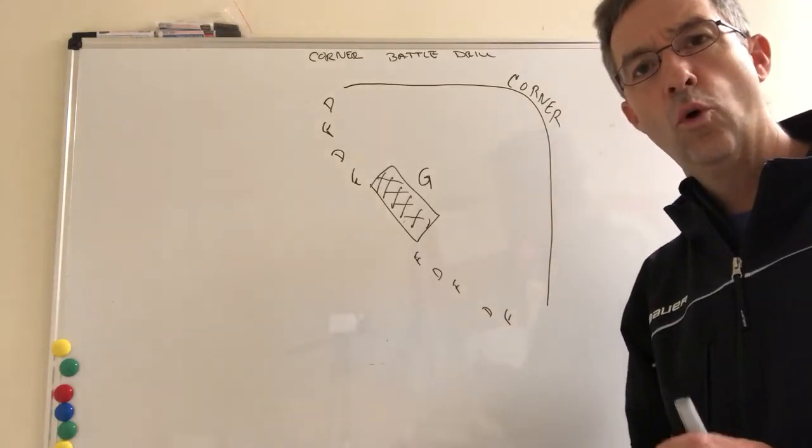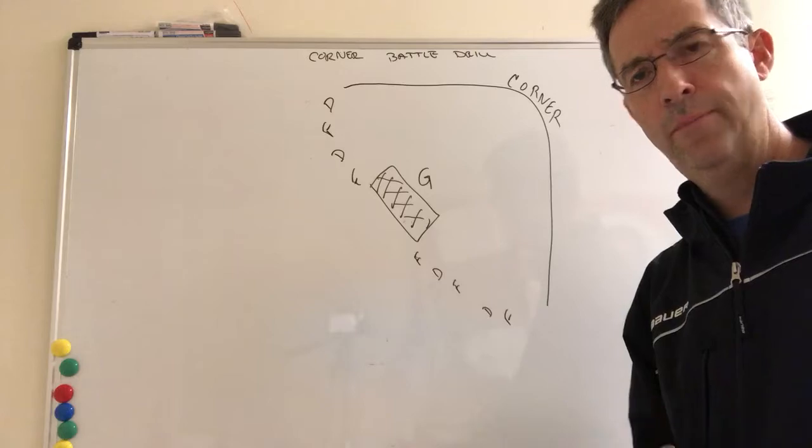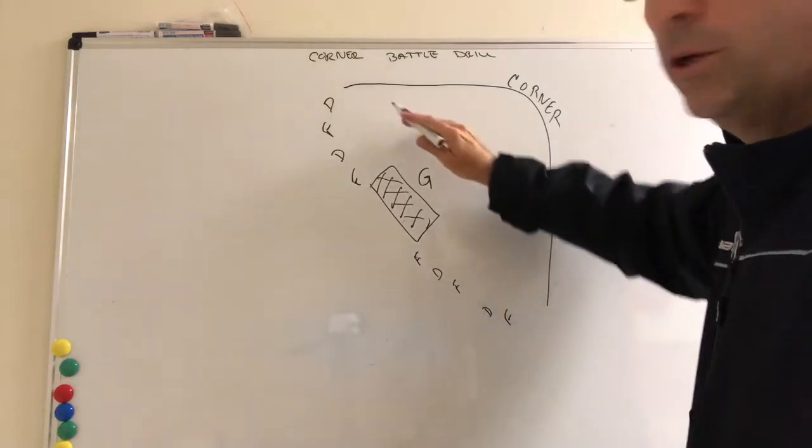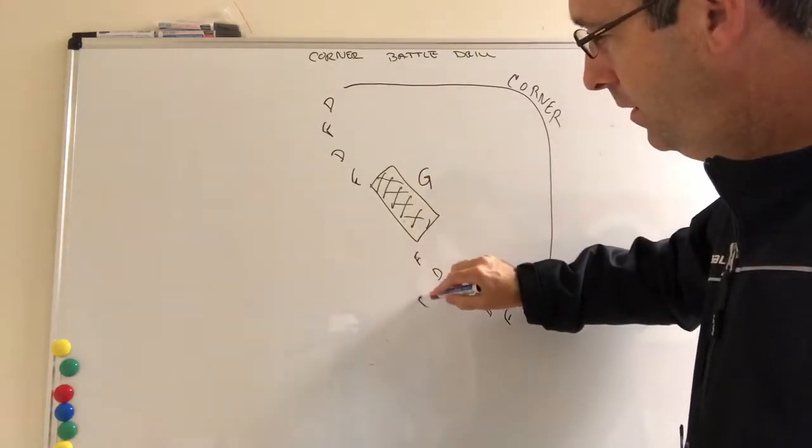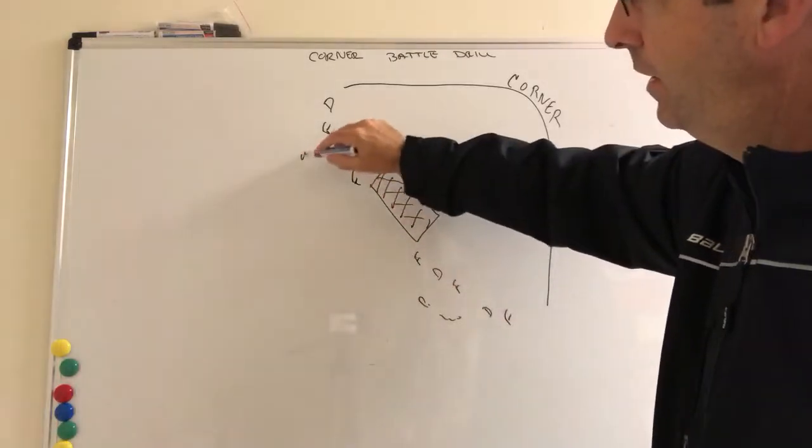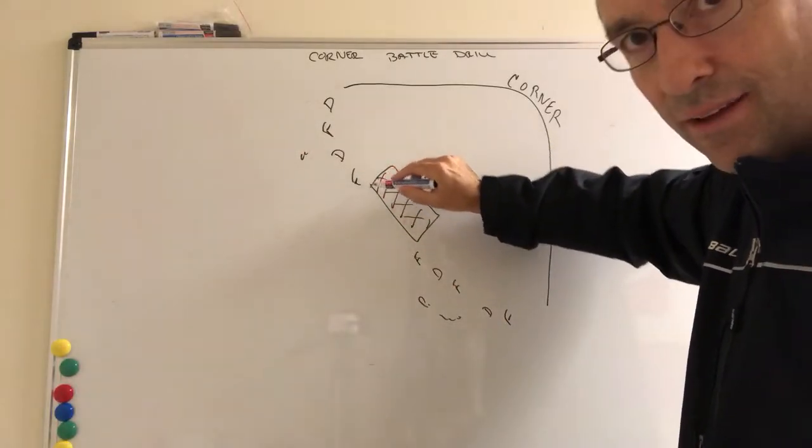This next one's called the corner battle drill. We're all going to go to the corner. The pucks are going to be out here behind the players, this net is lined up.